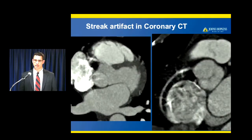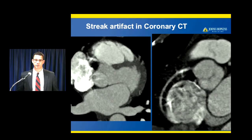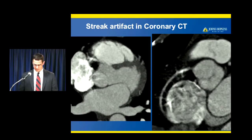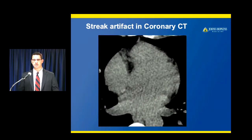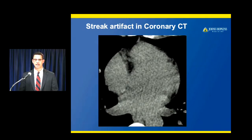We certainly encounter these artifacts in coronary CT as well. This is a case of a patient who had blurring of high attenuation material from the right atrium that created a streak through the proximal right coronary artery, which really looks a lot like calcium. It might be hard to say this is not calcified plaque. But when you go to the calcium scoring examination, sure enough there is no calcium there — it's all artifact related to high attenuation contrast in the right atrium causing streak.